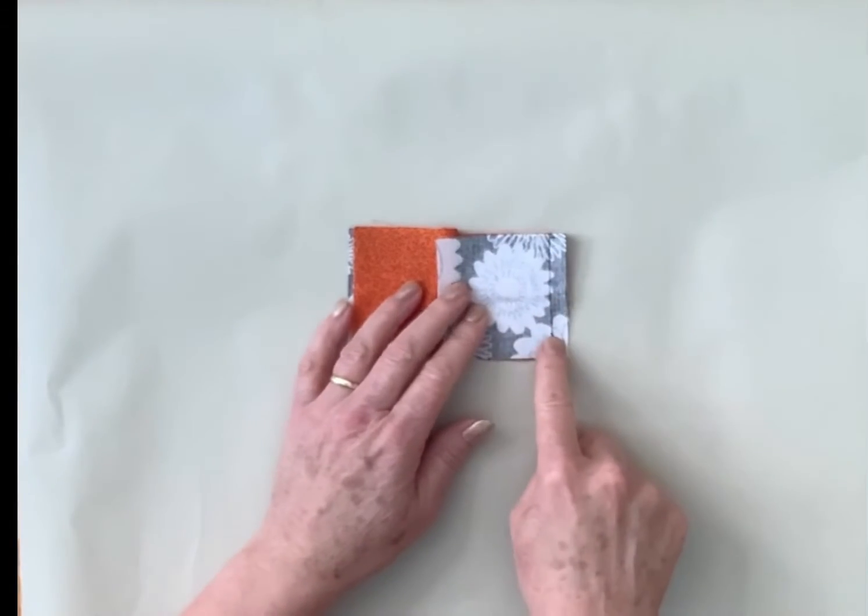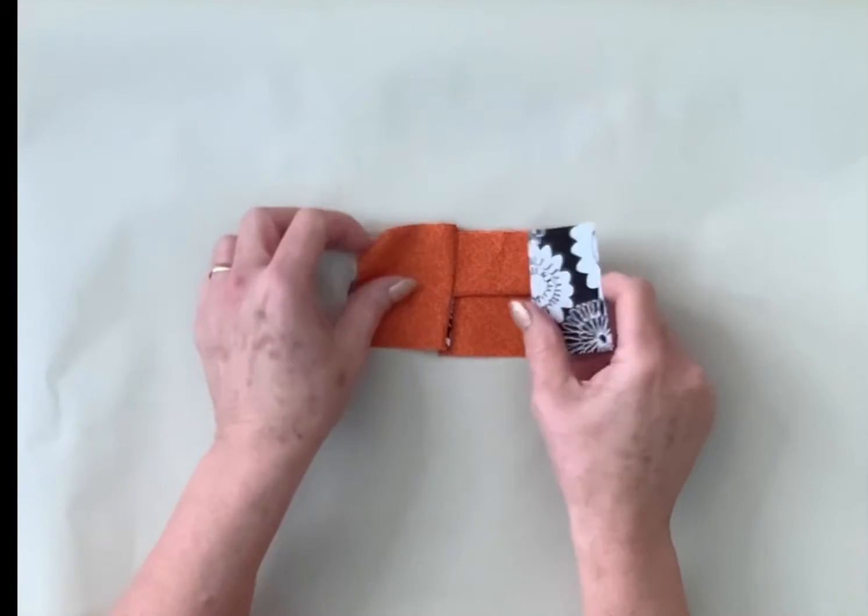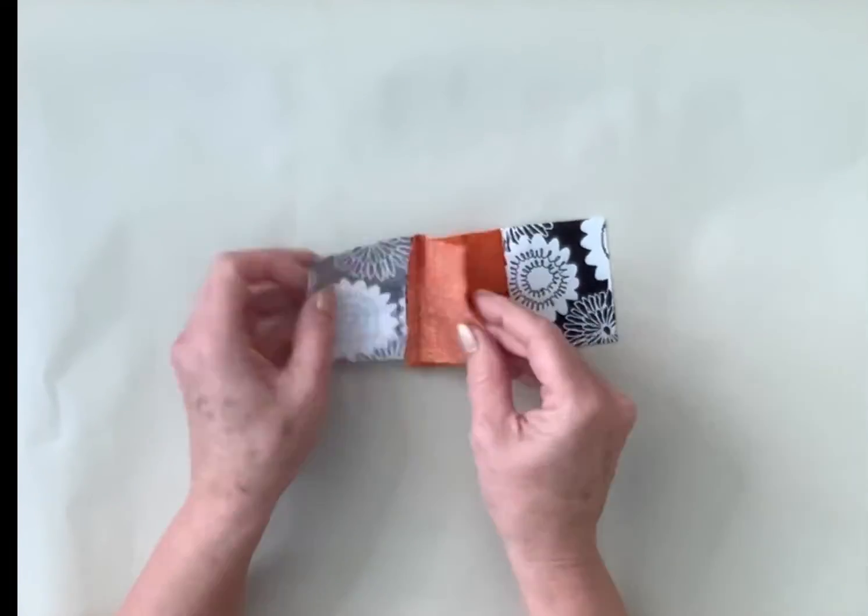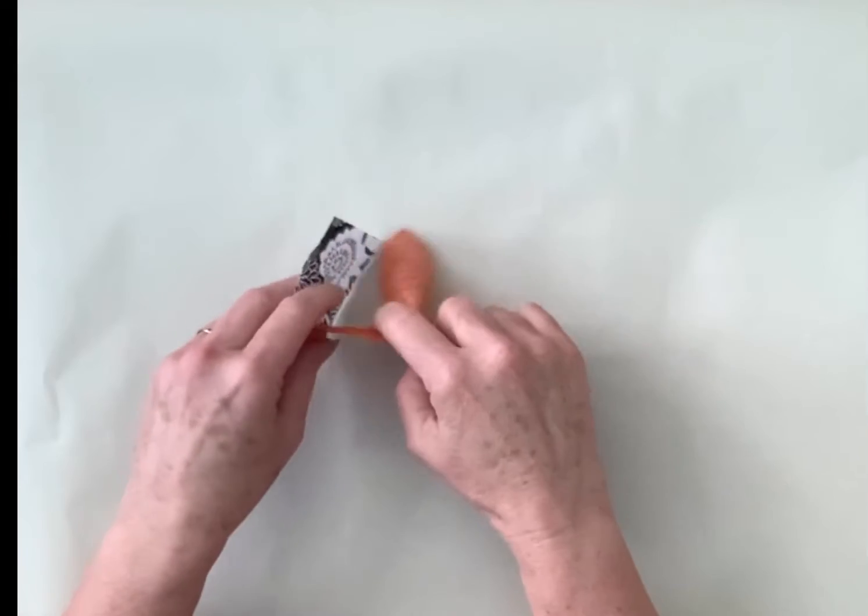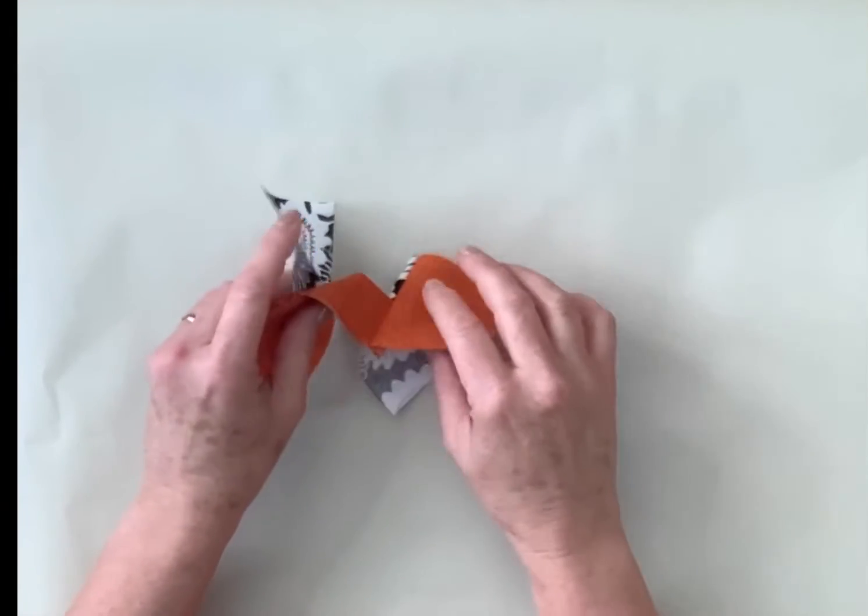We've now sewed our seam allowance down here, we can now open this up and as you can see when you open it up you've got a shape like that.